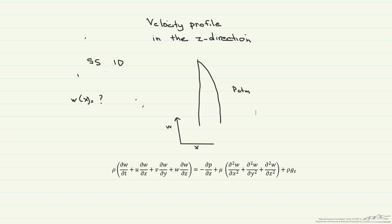So let's start simplifying our Navier-Stokes. First of all, we know that it's steady state, so this is going to be zero. We know that it is one-dimensional, therefore u and v are going to be equal to zero, so we're going to get rid of every term that has a u or a v.